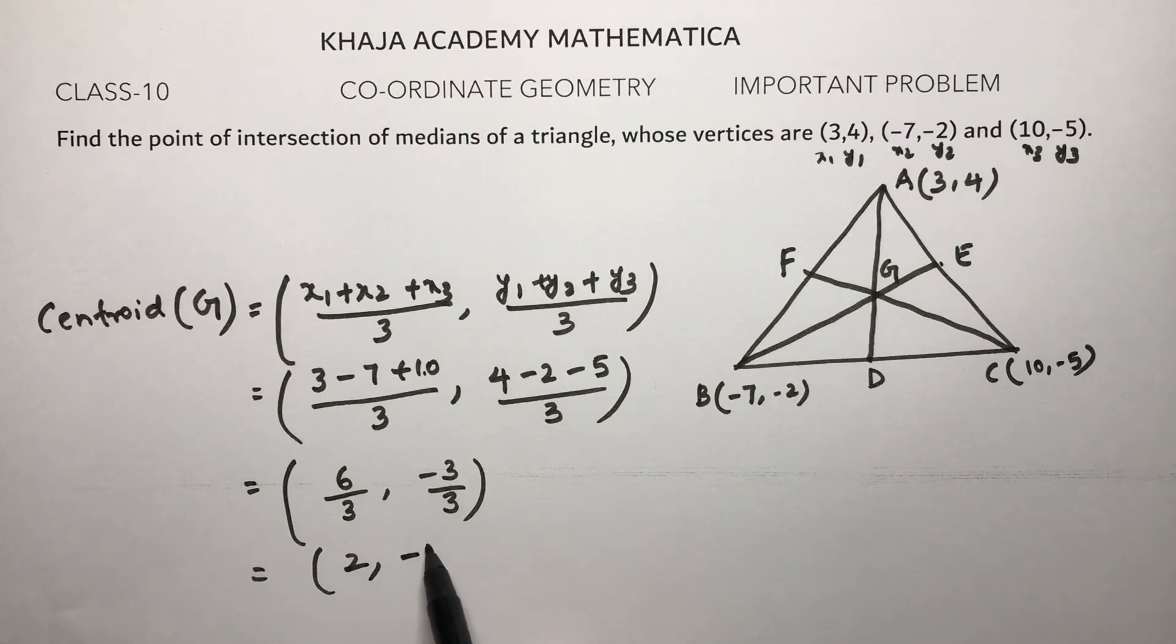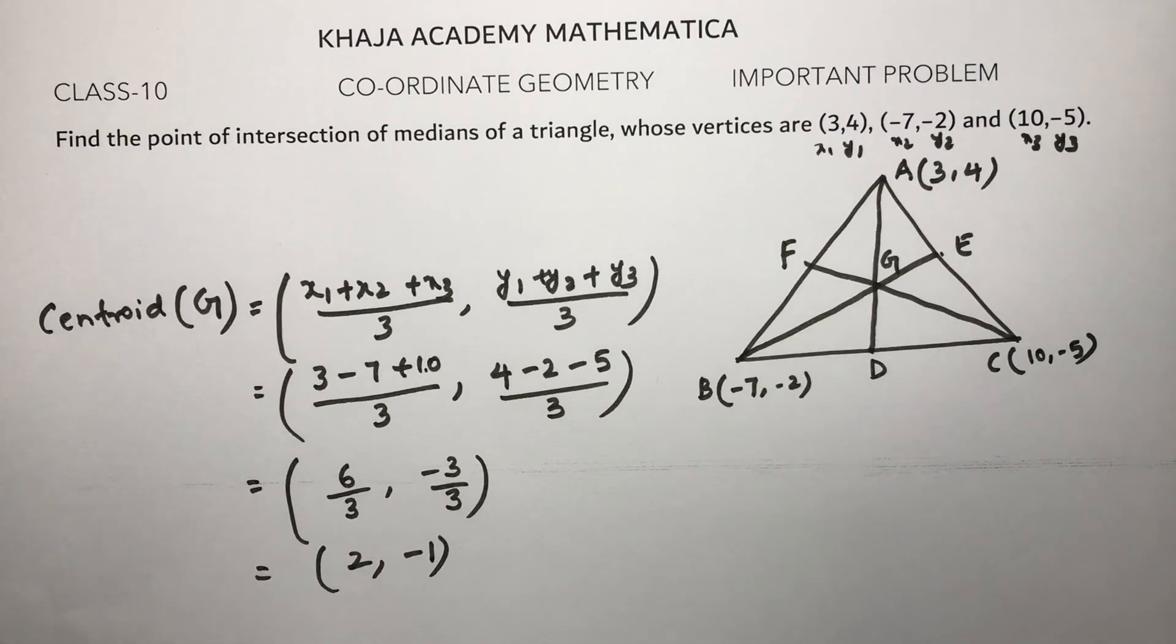So the point of intersection of medians is (2,-1). This is the centroid.